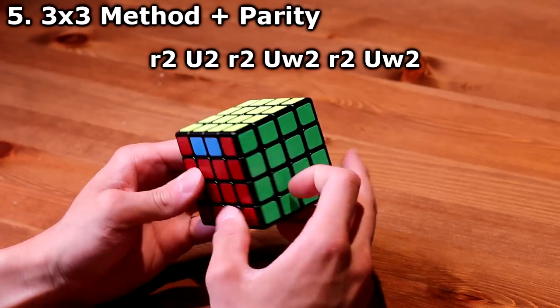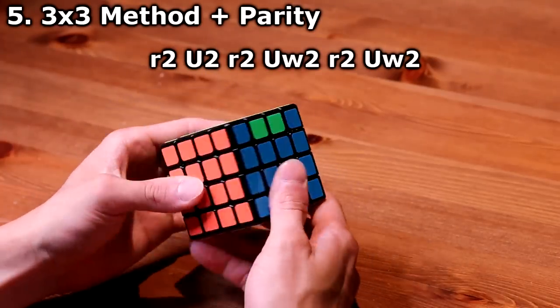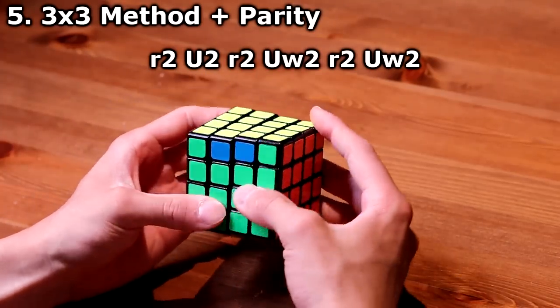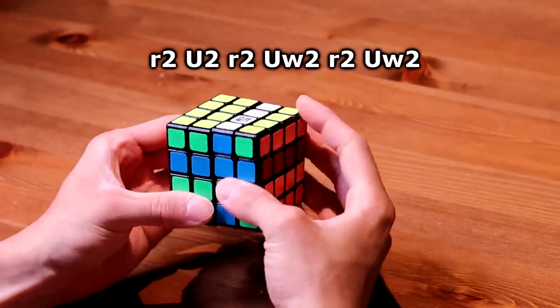There could be two edges next to each other, or across from each other, and you would do this algorithm from any side, and it will basically reduce the parity, and you will be able to solve it just like a normal 3x3 Rubik's Cube.